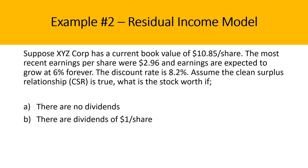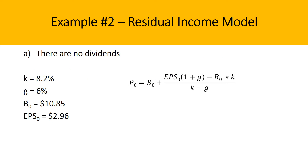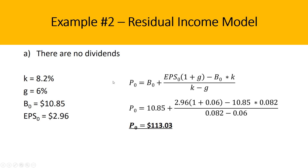Let's look at an example covering this relationship. XYZ Corp has a current book value of $10.85 a share, most recent EPS of $2.96 a share, earnings expected to grow at 6% forever, and a discount rate of 8.2%. Assume the clean surplus relationship is true. In section A, there are no dividends. The variables are: discount rate 8.2%, growth rate 6%, book value $10.85, EPS $2.96. Inputting these into the RIM formula gives an answer of $113.03 a share — the fundamental value of the stock.